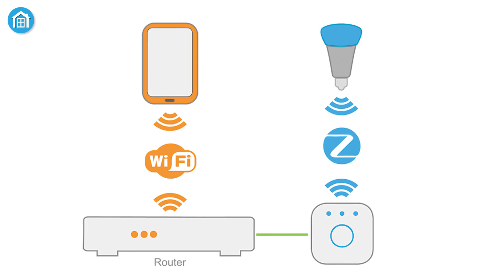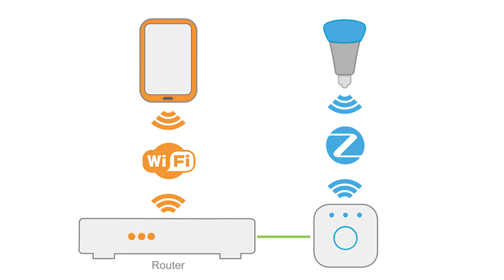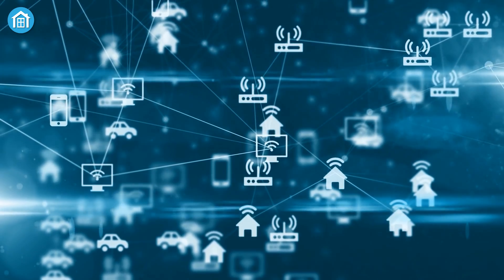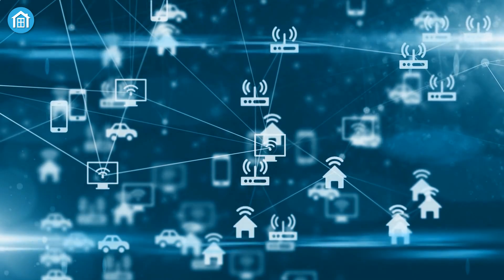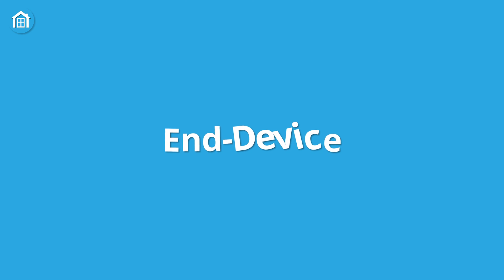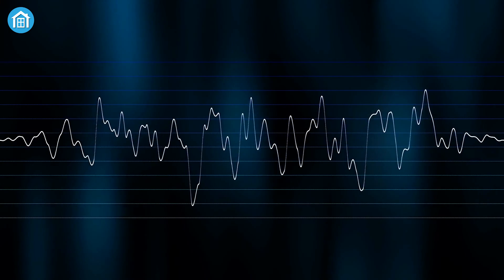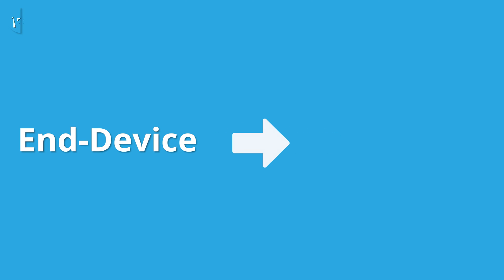The second device role is the router. Full-function devices that are powered serve as routers to repeat the Zigbee signal. Routers communicate with other network equipment and repeat the network signal — it's similar to playing telephone, except Zigbee is very good at it; as long as the machines can hear each other, the message is perfectly transmitted. End devices are limited-function or battery-powered devices. They are not repeaters or forwarders of signals, and importantly, end devices do not talk to each other — they only talk to routers and coordinators.